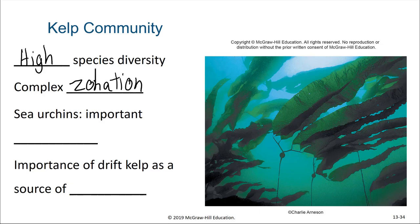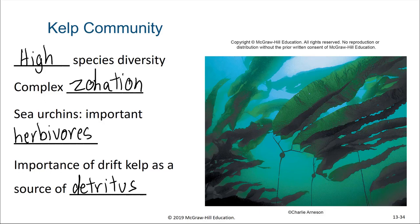In a kelp community, sea urchins are very important herbivores. The organisms that prey on herbivores also play an important role in balancing the community. While urchins feed directly on kelp, many other members of the kelp community feed on small pieces of kelp that have broken off the larger. This is called drift kelp and it is an important source of detritus which feeds many members of the community.